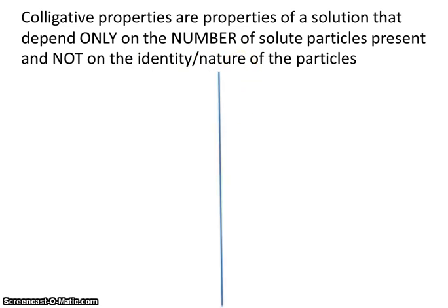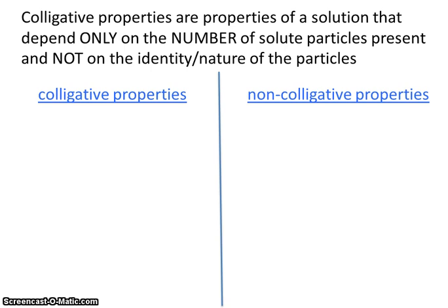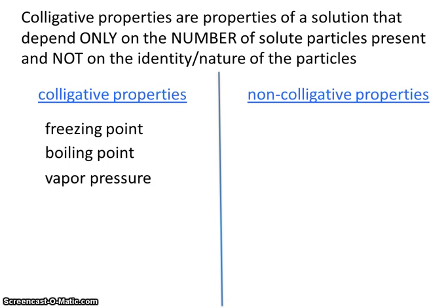Let's look at some colligative properties and some non-colligative properties. Freezing point, boiling point, vapor pressure, and osmotic pressure are all colligative properties, meaning that it doesn't really matter too much what is dissolved — it just matters how much is dissolved.